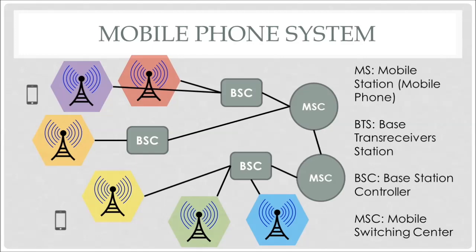Using this system, if a user wants to make a call, the user will communicate with its attached base transceiver station. The BTS then passes this information to the base station controller, which forwards the information to the mobile switching center. The MSC then finds the destination user and transfers the call request to them. After receiving the call request, the mobile starts ringing, indicating a new incoming call.